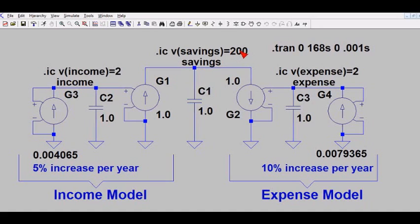So here we've set his initial savings for $200,000 by doing the SPICE directive .ic v(savings)=200. So that's going to set the savings at initially $200,000.